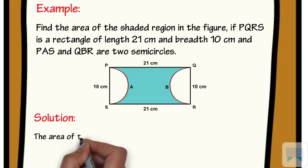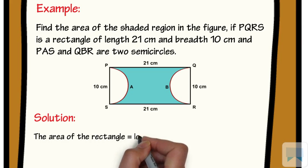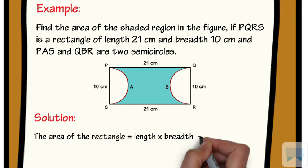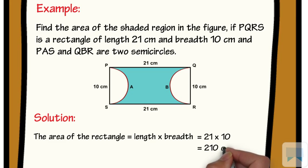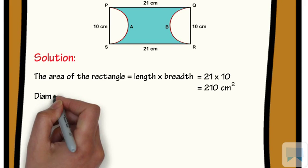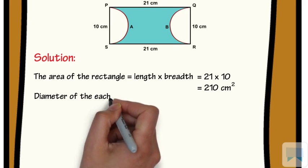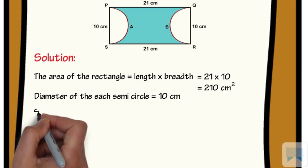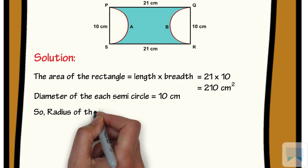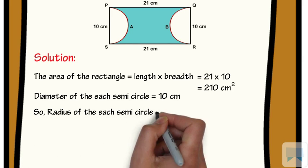The area of the rectangle is equal to length times breadth, which is 21 times 10, equal to 210 cm². The diameter of each semicircle is equal to 10 cm, so the radius of each semicircle is equal to 5 cm.